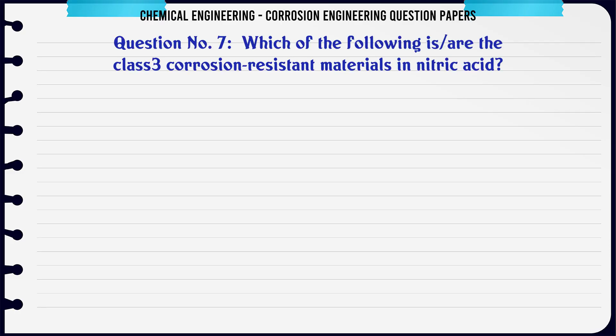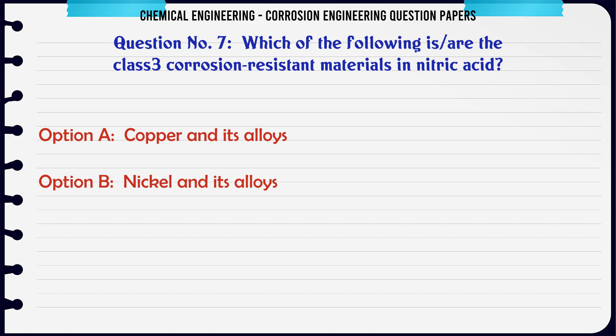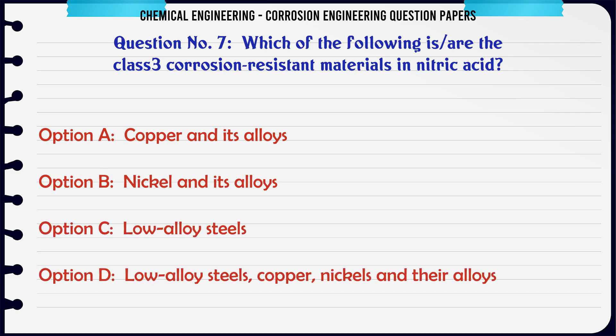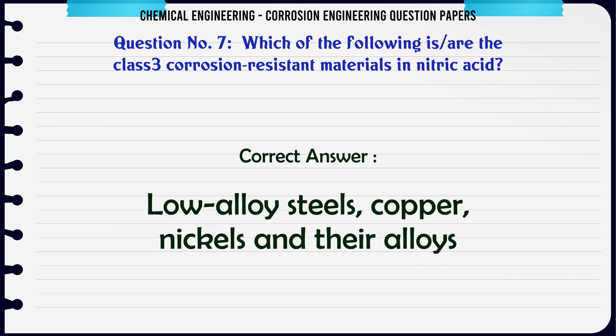Which of the following is/are the class 3 corrosion resistant materials in nitric acid? A. Copper and its alloys. B. Nickel and its alloys. C. Low alloy steels. D. Low alloy steels, copper, nickels, and their alloys.